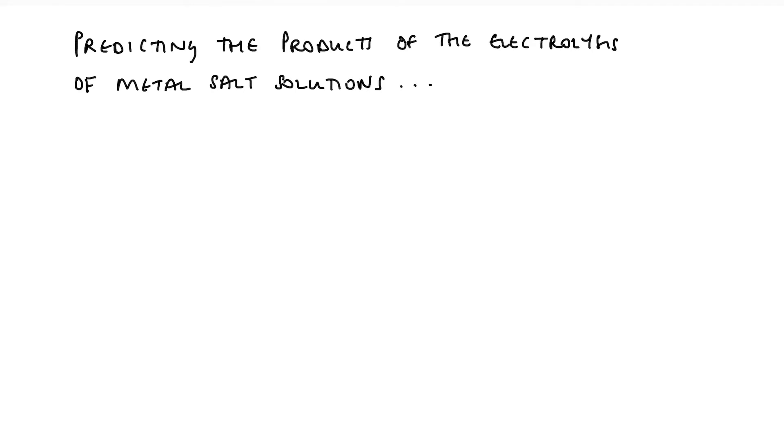So let's start by considering the anode. So as we've seen at the anode, we have oxidation. And that is either of water or the anion. One or the other is going to lose electrons and be oxidized.